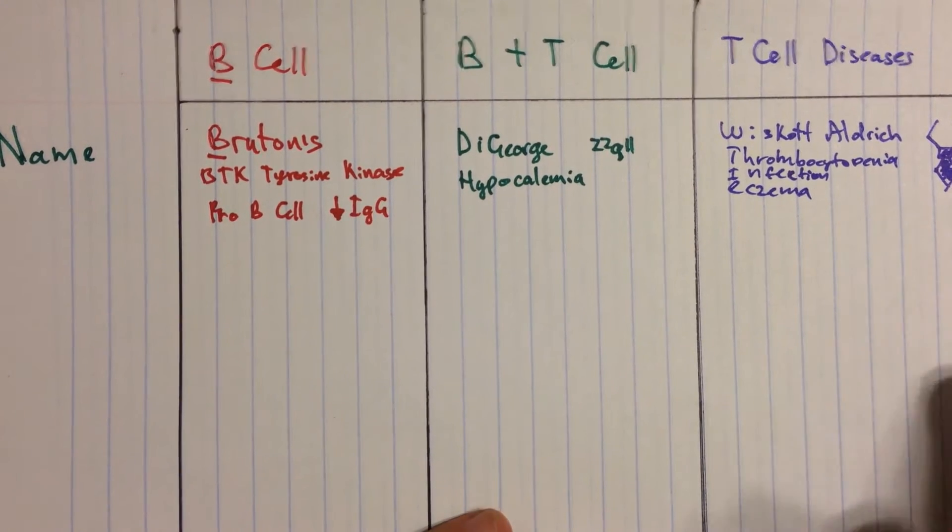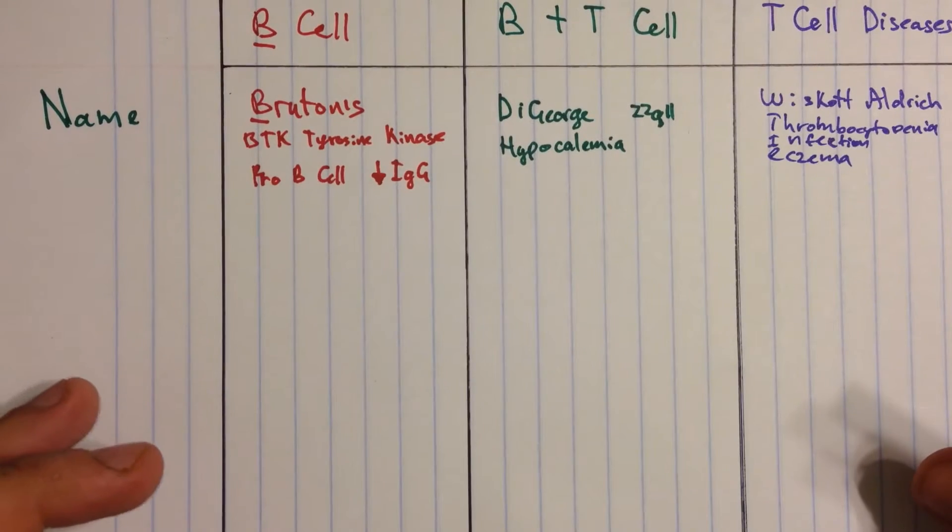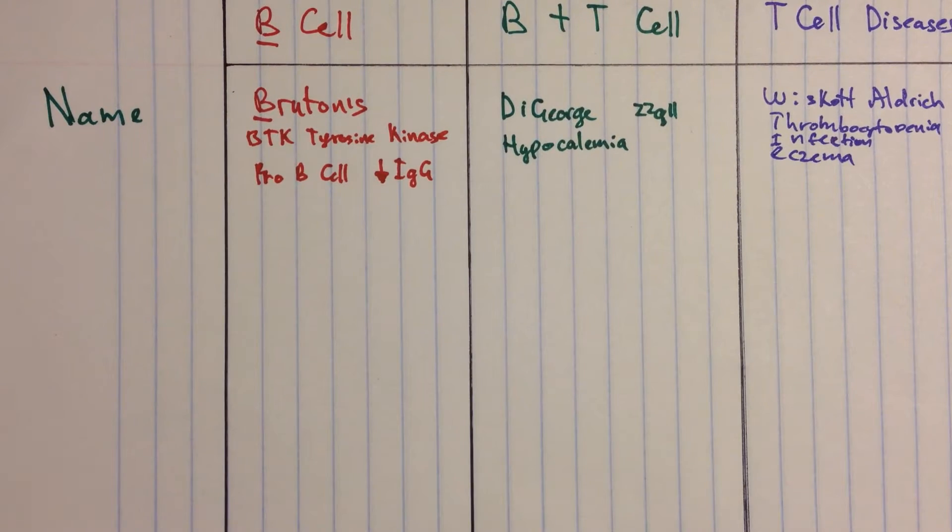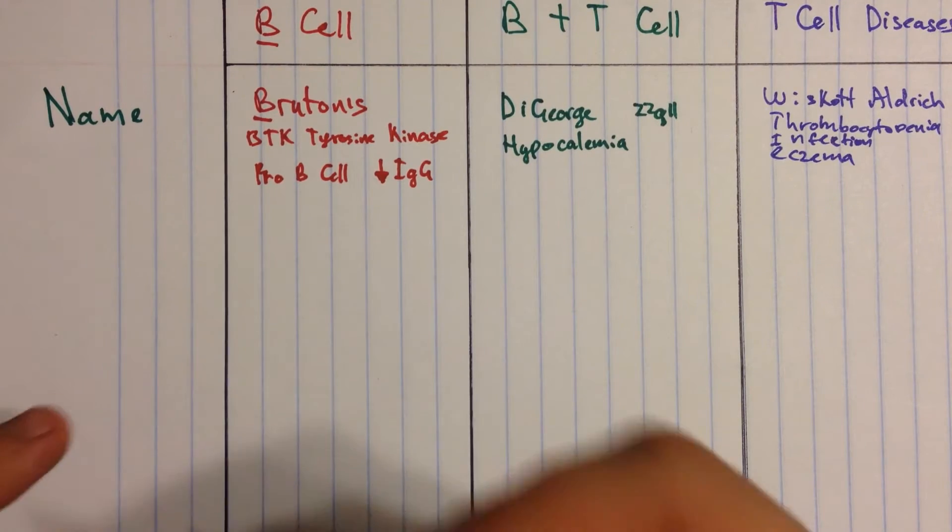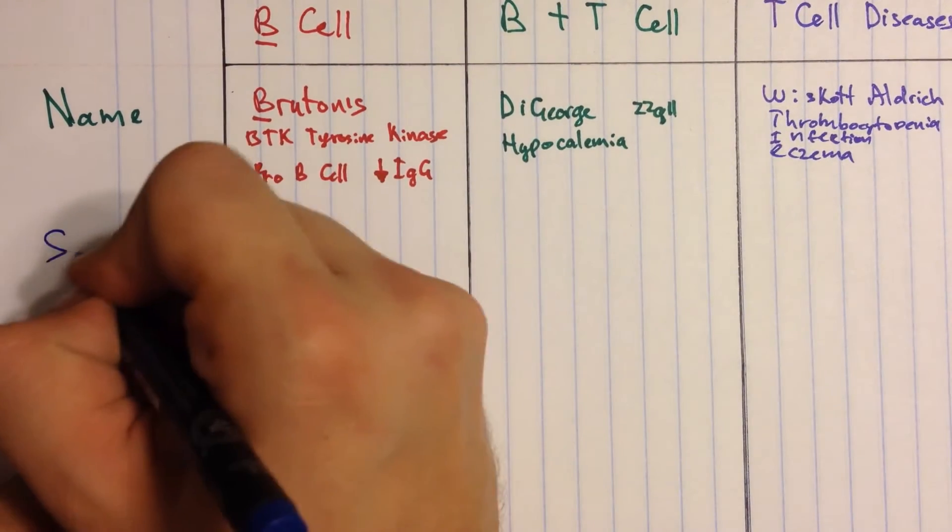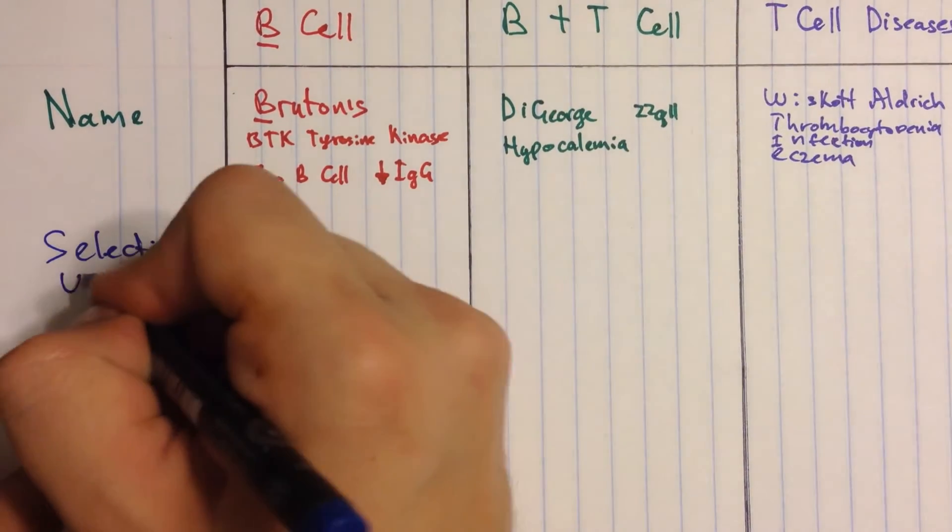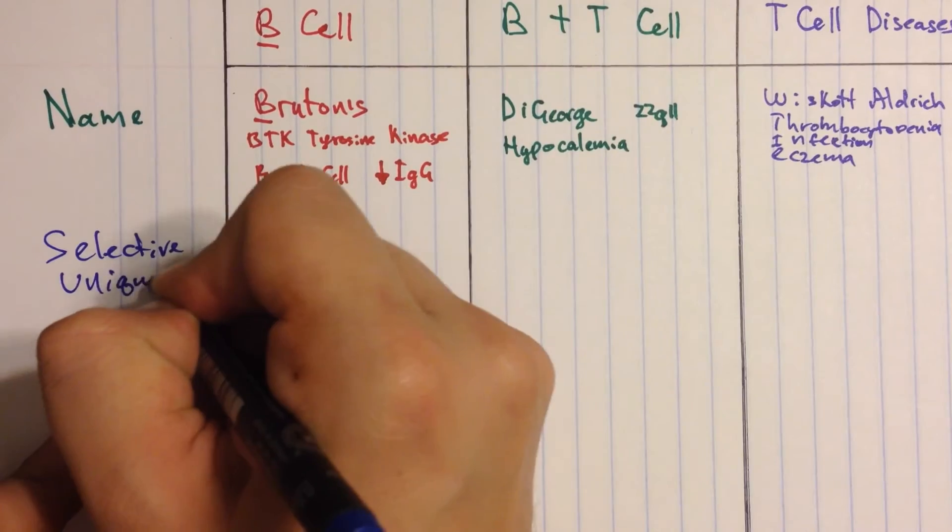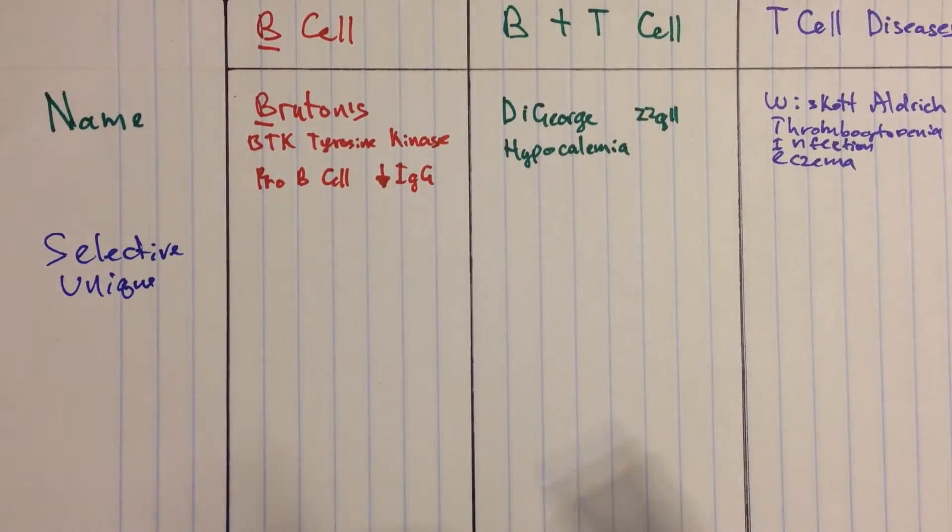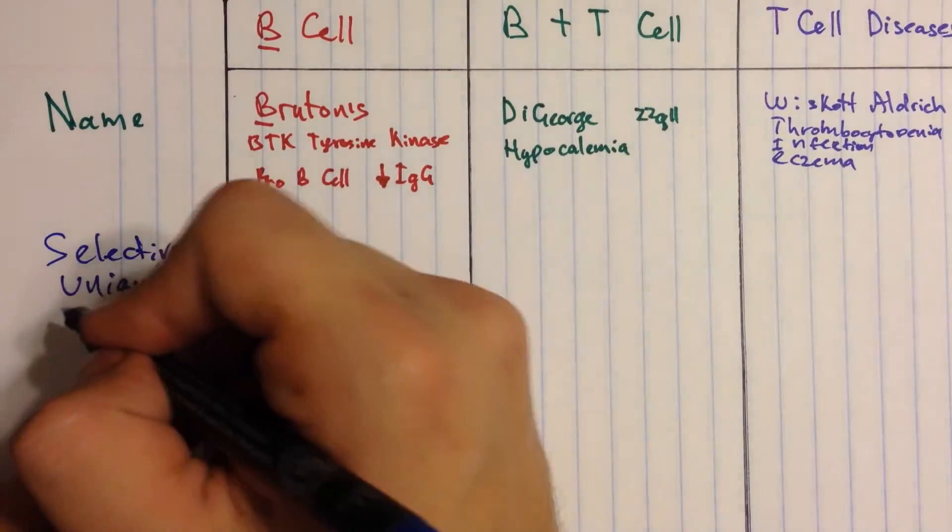Now once we're done with the names, the next thing you want to remember about a person you meet is what's unique about them. Since we're talking about antibodies, maybe each of these B-cell or T-cell problems has something unique, special. This is the special antibody category.